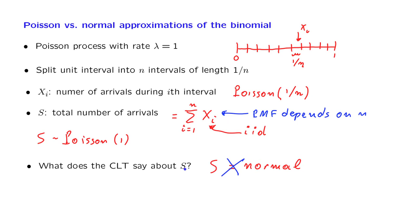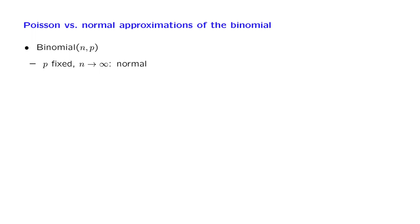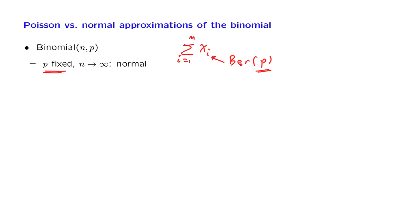So there is no contradiction between the two types of approximations. To summarize: consider a binomial random variable with parameters n and p. If we let p be fixed and let n go to infinity, the binomial random variable can be thought of as the sum of n Bernoulli random variables with parameter p, which is fixed. So we're dealing with the sum of iid random variables from a fixed distribution — this is the situation where the central limit theorem applies and we have a normal approximation.